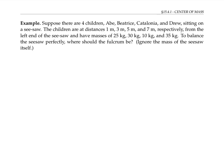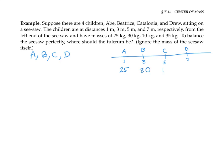As a warm-up problem, let's suppose there are four children — Abe, Beatrice, Caledonia, and Drew — and they're all sitting on a seesaw. The children are at distances from the left end of the seesaw of one meter, three meters, five meters, and seven meters respectively. They have masses of 25 kilograms, 30 kilograms, 10 kilograms, and 35 kilograms. We need to figure out where to put the fulcrum of the seesaw to make it balance perfectly, ignoring the mass of the seesaw itself.